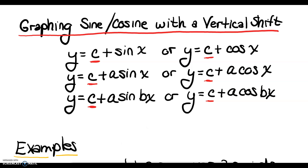It's very clear that we're moving our graph up or down by a value of c. This first example only has a vertical shift. We'll do one example with only a vertical shift, then another example combining a vertical shift with amplitude change — since a is an amplitude — and finally a last example with a vertical shift, amplitude change, and period change.